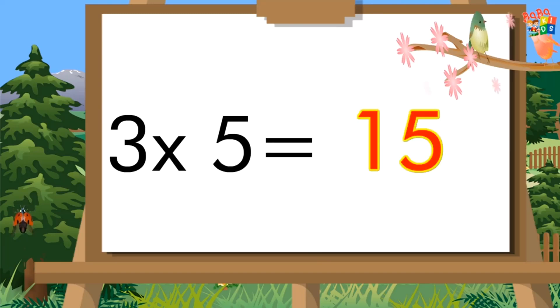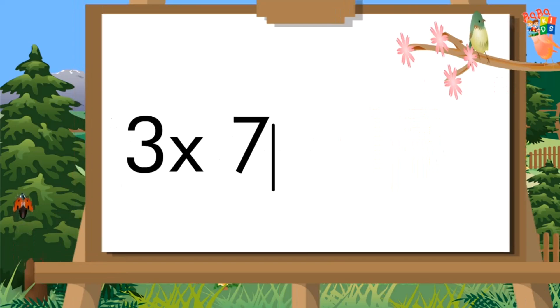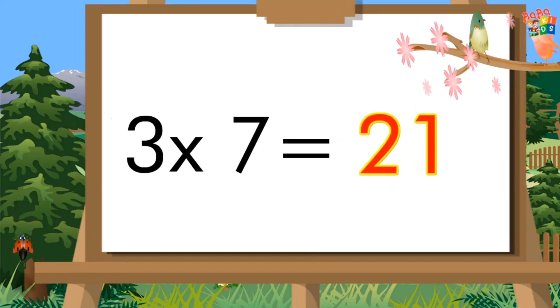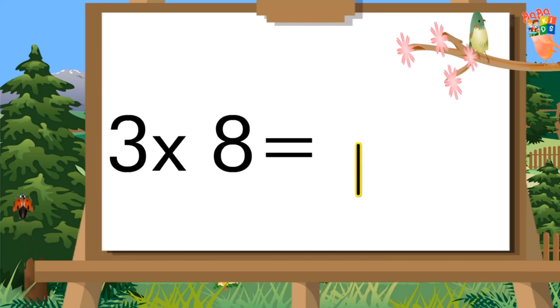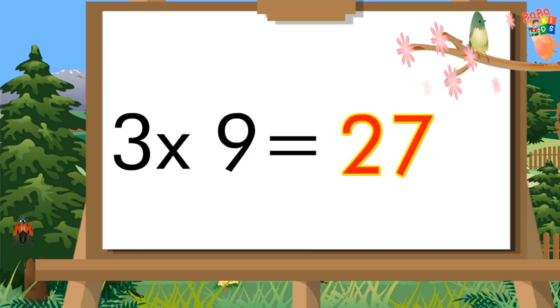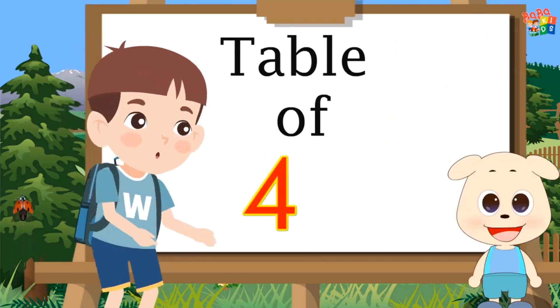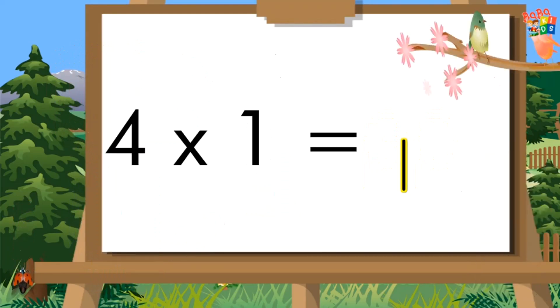Three, five's a fifteen. Three, six's a eighteen. Three, seven's a twenty-one. Three, eight's a twenty-four. Three, nine's a twenty-seven. Three, ten's a thirty.